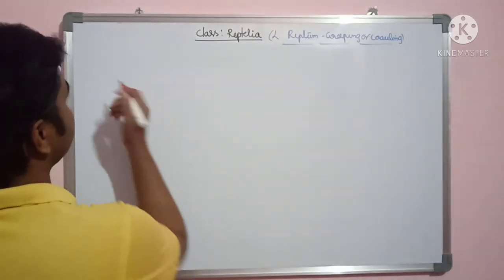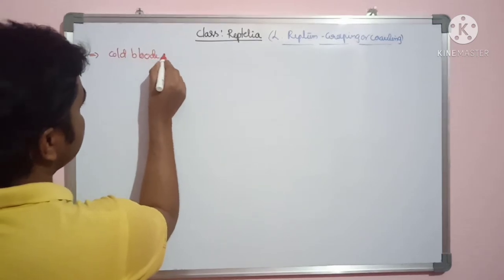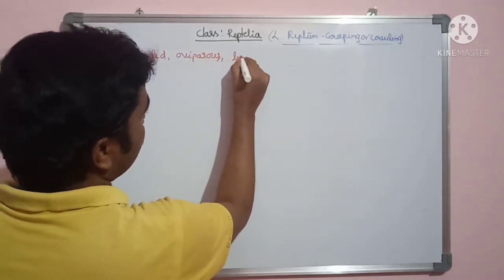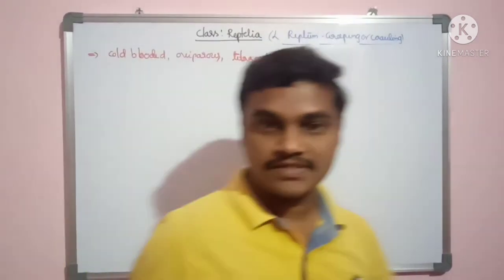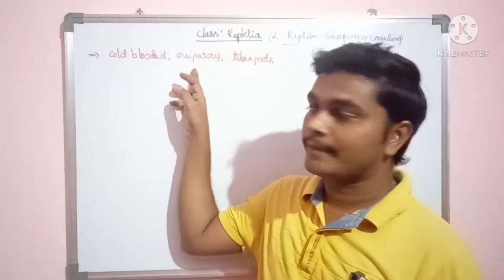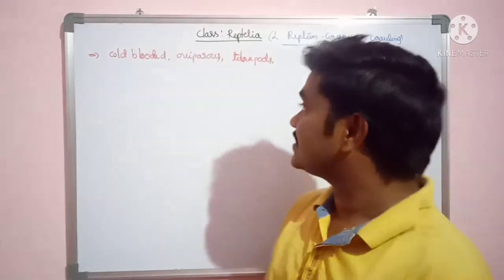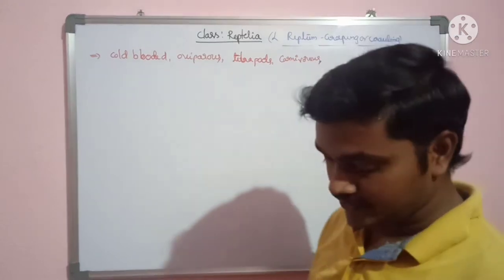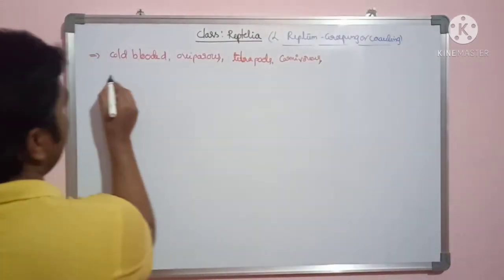The general characters of Reptilia: these are cold-blooded, oviparous tetrapods. Cold-blooded means the body temperature varies with the environment. Oviparous means they can lay eggs. Tetrapods means they have four limbs. These are mostly carnivorous organisms.